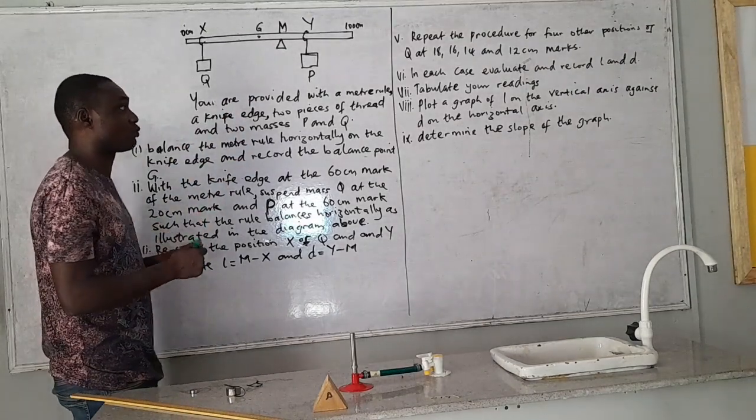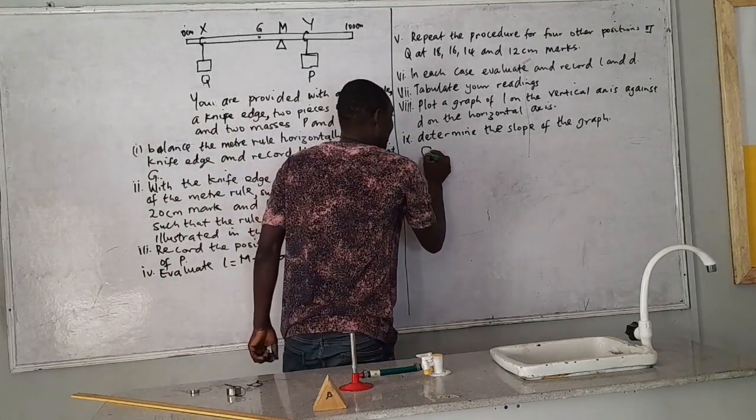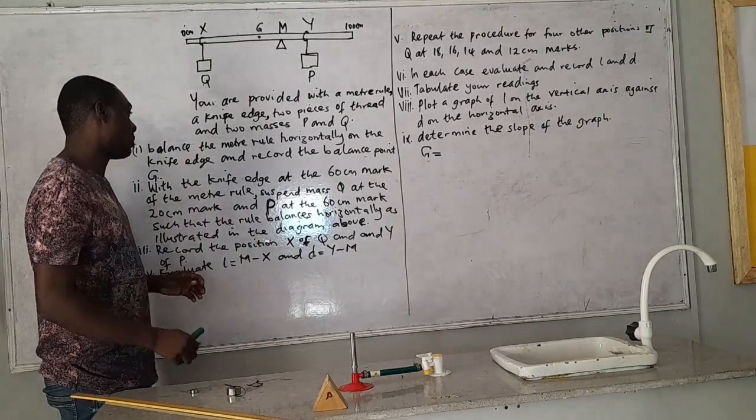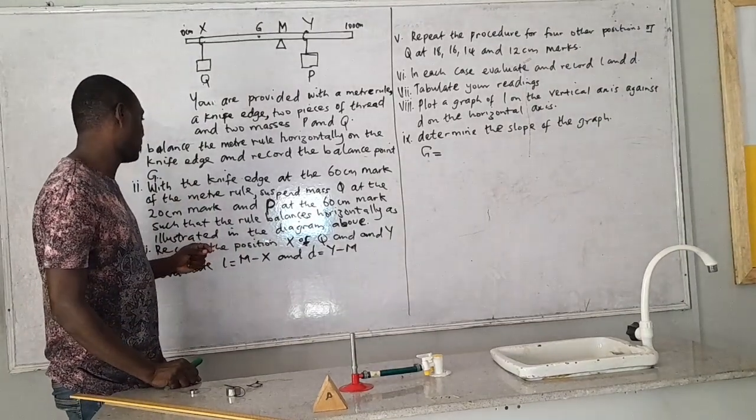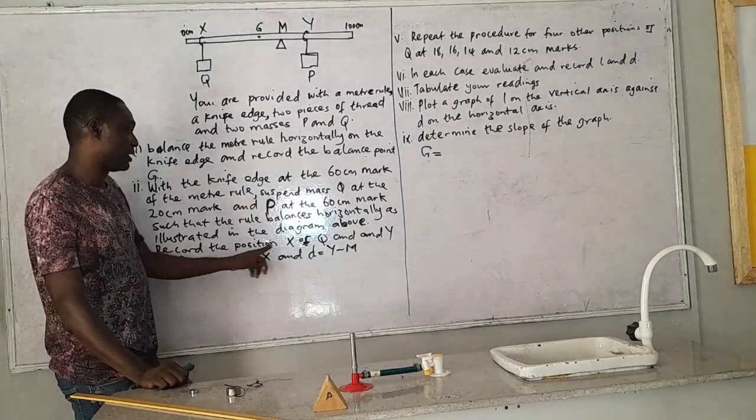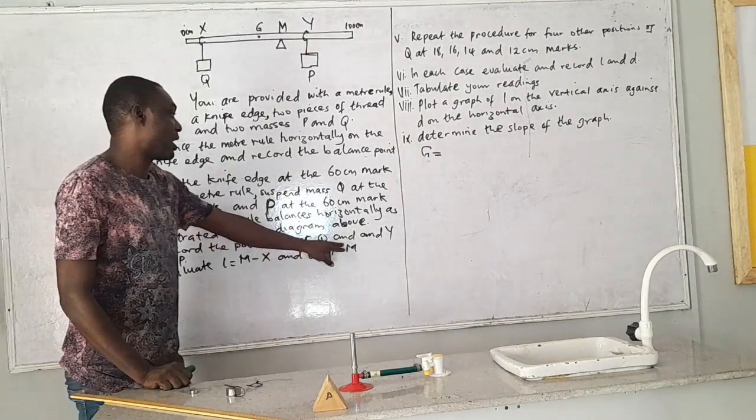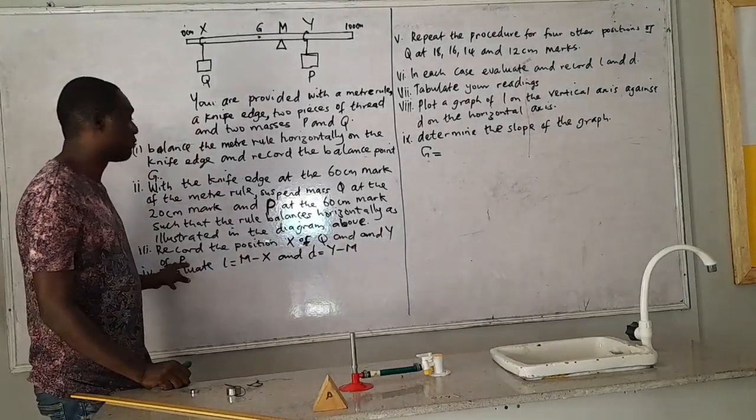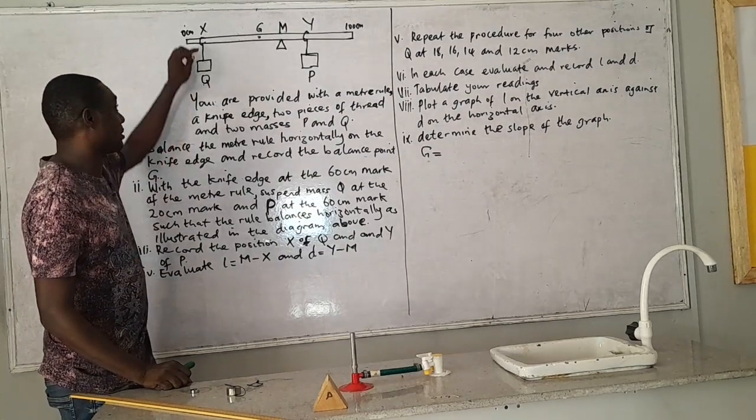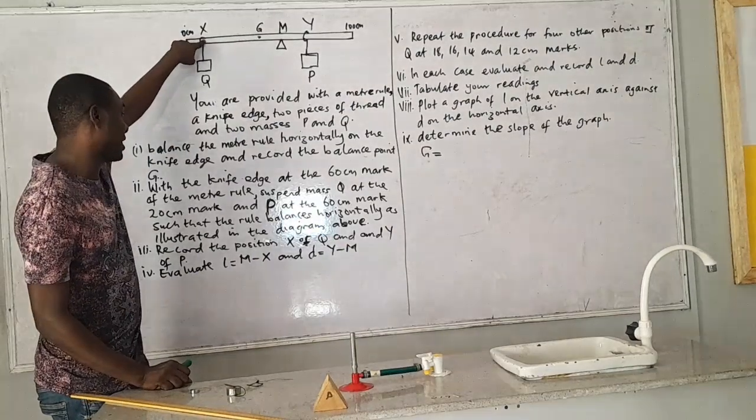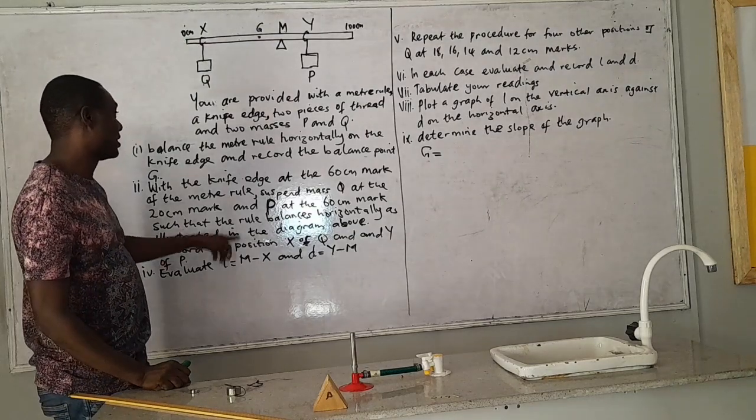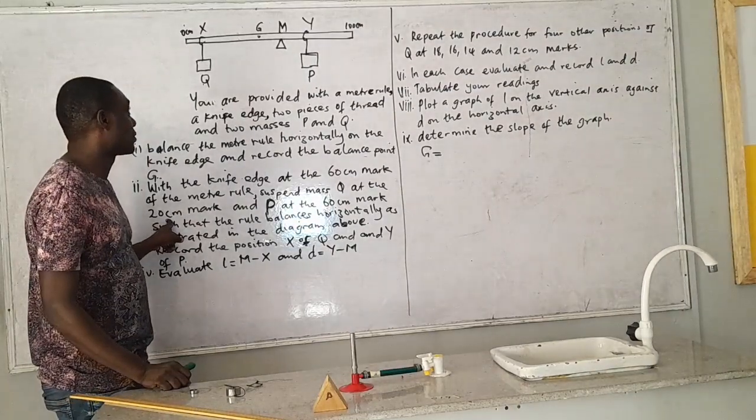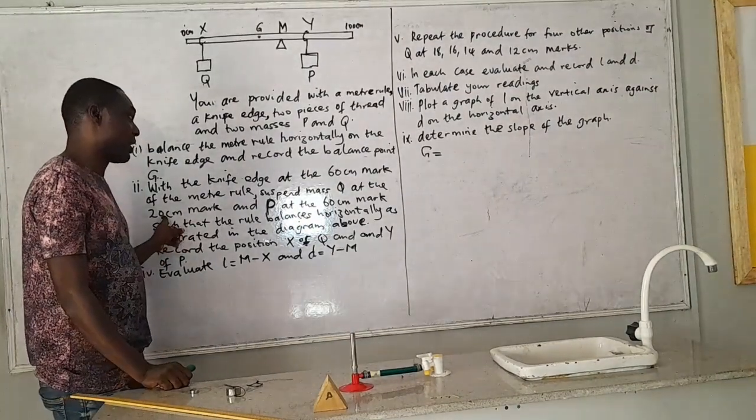This is what it asks us to record. We're going to record the value of G. We're going to measure that and record. Then on our table, we have to record the position of X of Q and the position of Y of P. Now let's look at this. The position of X from the first statement is that X should be placed at the 20 cm mark. So that should be the position of X. So I'm going to have this X in centimeters.